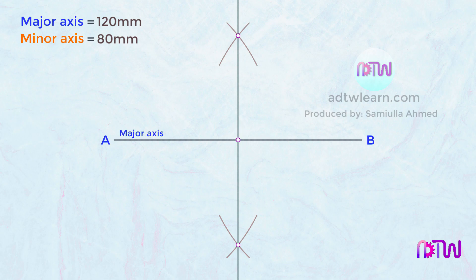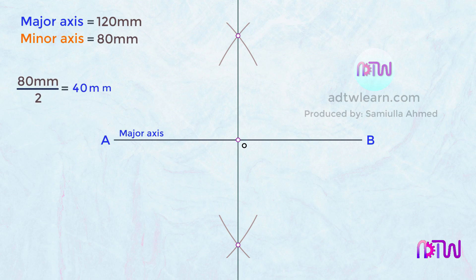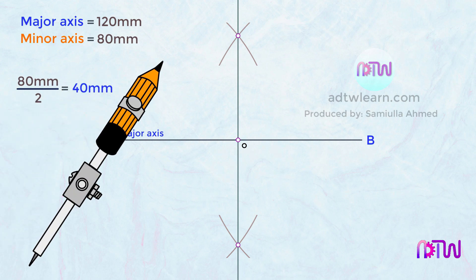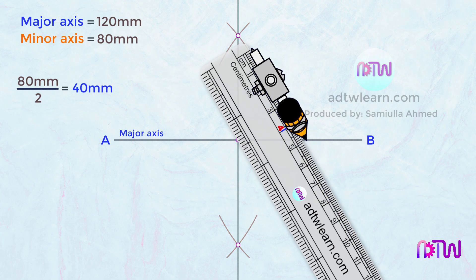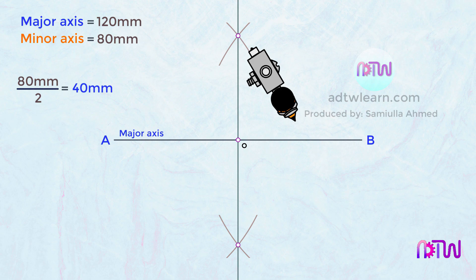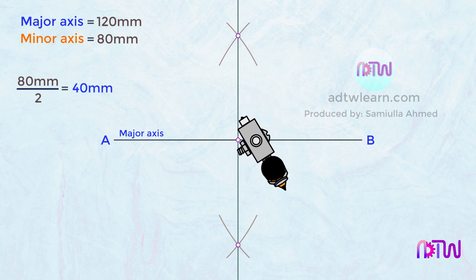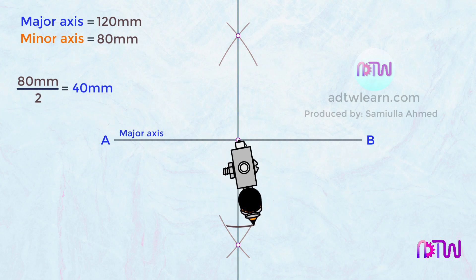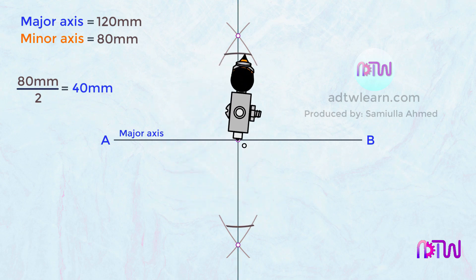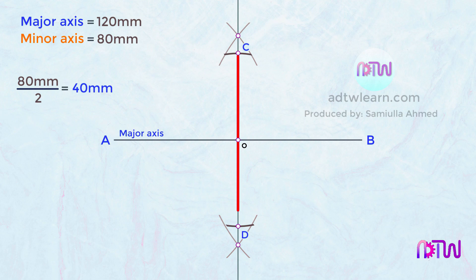Name this intersection point as O. The minor axis total length is 80 millimeters, so half of 80 millimeters will be 40 millimeters. Take 40 millimeters on the compass, keep it at intersection point O, and cut arcs on both sides of this line. Mark these points as C and D — this length will be our minor axis.